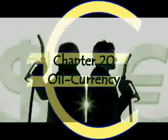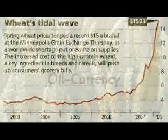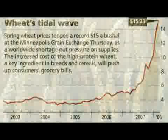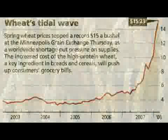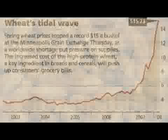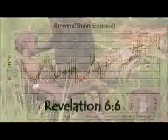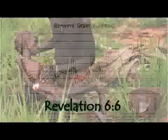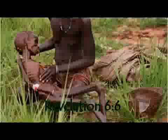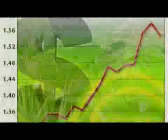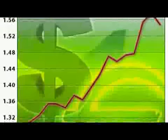Chapter 20: Oil Currency Trading for the End. 'A quart of wheat for a denarius, and three quarts of barley for a denarius, and do not damage the oil and the wine.' Revelation 6:6. Oil currency is the exchange rate for the end of time.